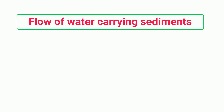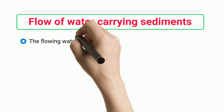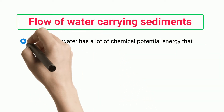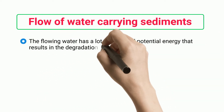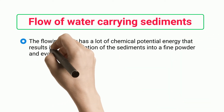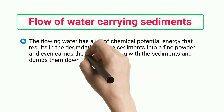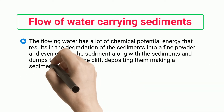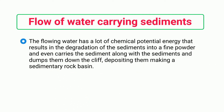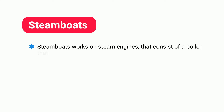Flow of water carrying sediments: flowing water has a lot of chemical potential energy that results in the degradation of sediments into a fine powder, carrying the sediments along and depositing them down cliffs, making a sedimentary rock basin.